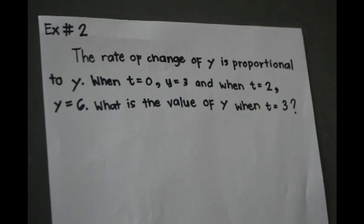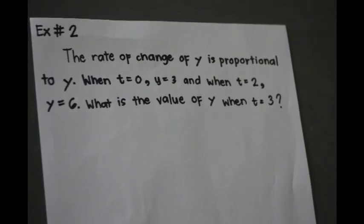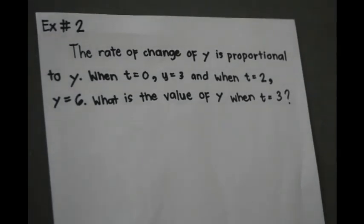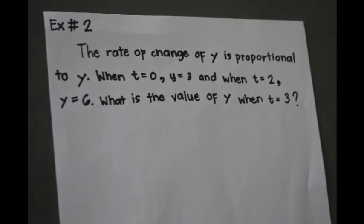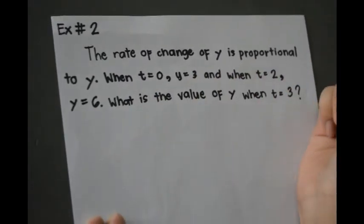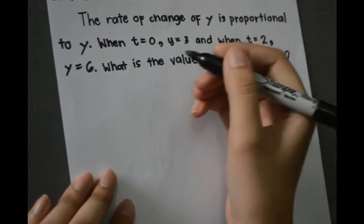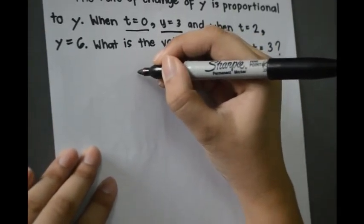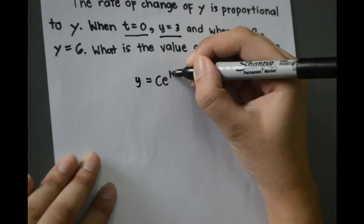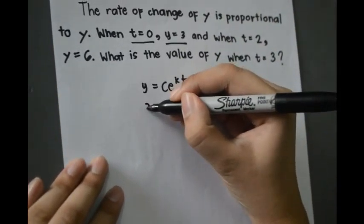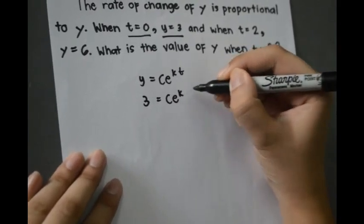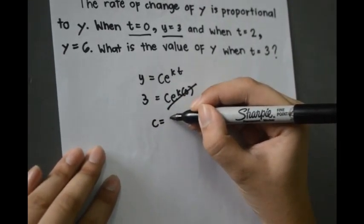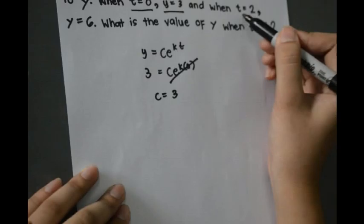The rate of change of y is proportional to y. When t equals 0, y equals 3, and when t equals 2, y equals 6. What is the value of y when t equals 3? We use the initial condition t equals 0 and y equals 3. Substituting, we find c equals 3.